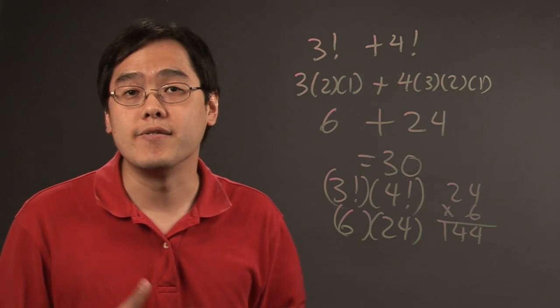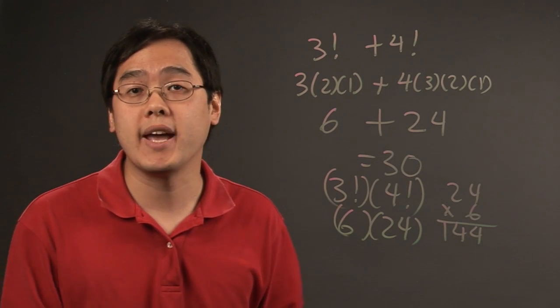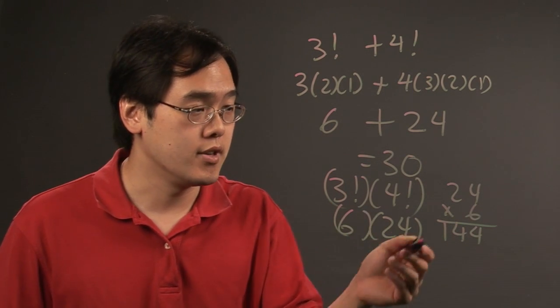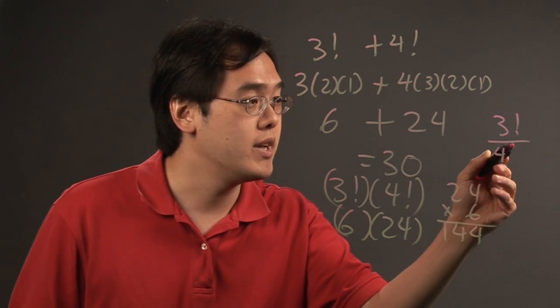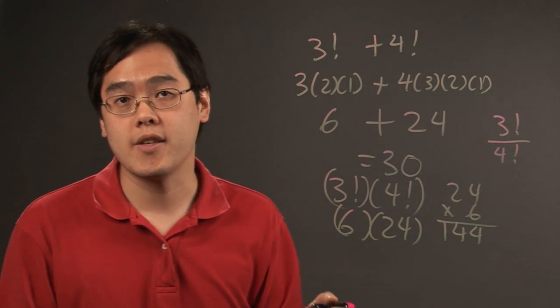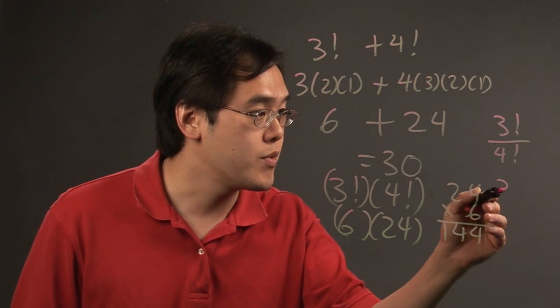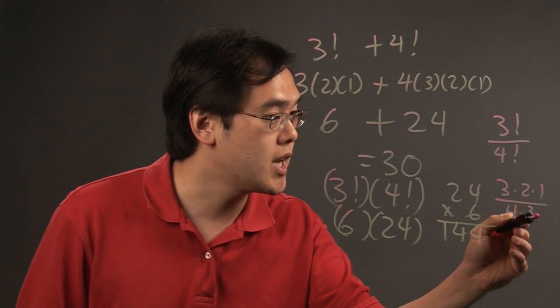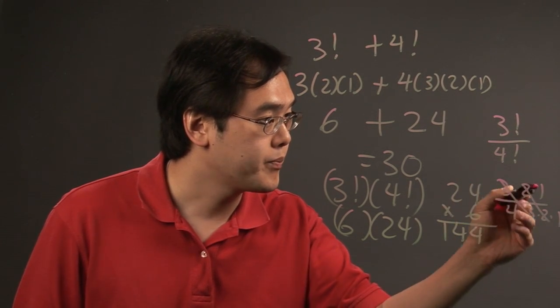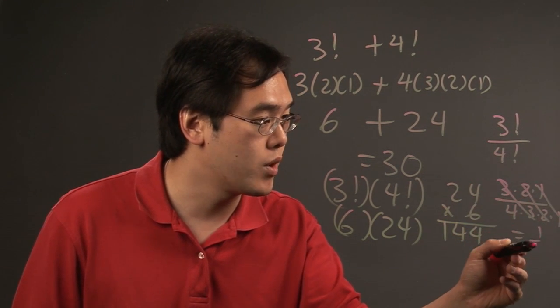And if you were to add or subtract or multiply and divide factorials, you can, for example, if you have 3 factorial divided by 4 factorial, it might be easier to expand the factorials out: 3 times 2 times 1 over 4 times 3 times 2 times 1, and then cancel appropriately and you're left with 1 quarter.